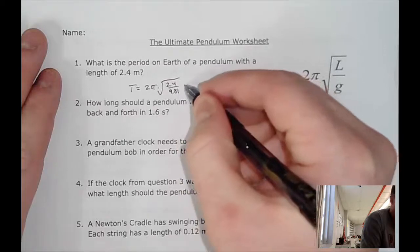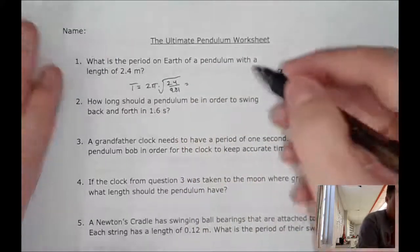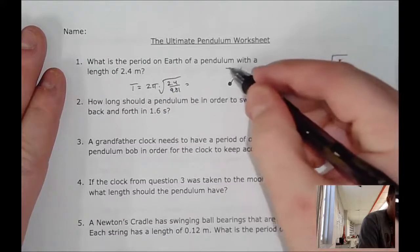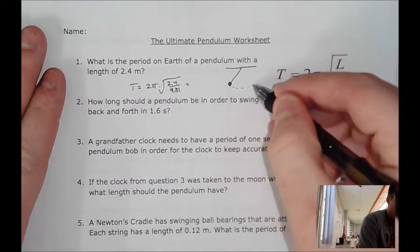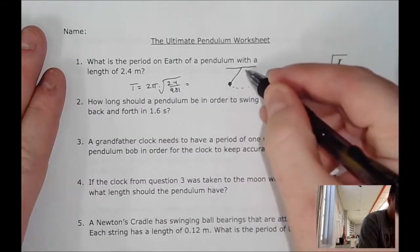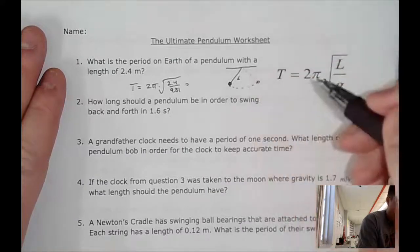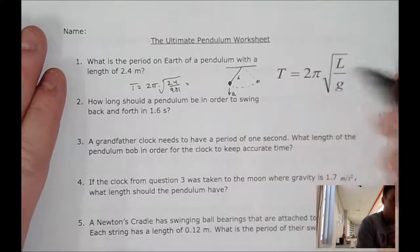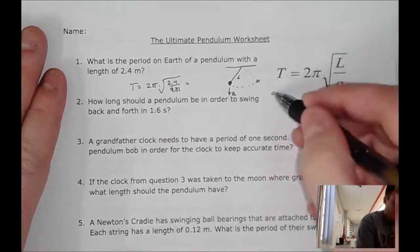Please note that the length of a pendulum, if we were to make some sort of oscillation back and forth like such, is L. And it's being pulled down by an acceleration. In this case, this acceleration is the acceleration due to gravity.